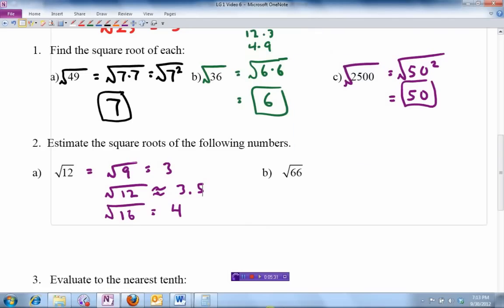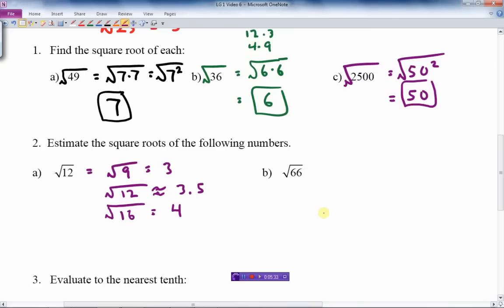So let's try the next one. Square root of 66. Let's find two numbers we do know the square root of. One that comes before it, and one that comes after it. Well, okay, 64. Wait a minute, 64.